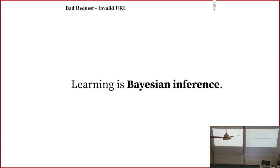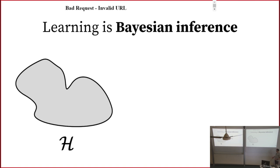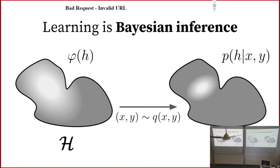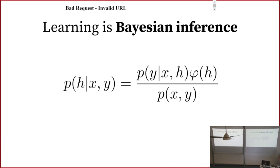What is learning? Throughout this talk I'm going to give you a few different definitions, starting with: learning is Bayesian inference. When I say that, I mean you have some hypothesis class with a prior — some uncertainty, a belief over different hypotheses ahead of time. Then you get some data sampled from some unknown true distribution, and you obtain a posterior: a new evaluation of belief over these hypotheses. It's about updating your belief in hypotheses in response to data.